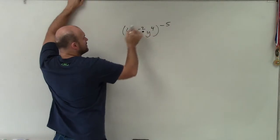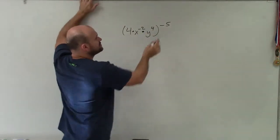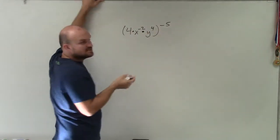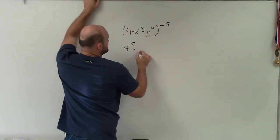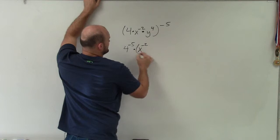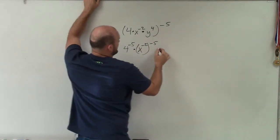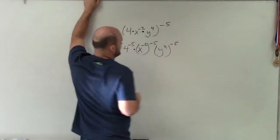Therefore, I can apply the power to product rule for each one of these, meaning I can distribute this across multiplication. So I have 4 to the negative fifth times x to the negative second raised to the negative fifth, and y to the fourth raised to the negative fifth.